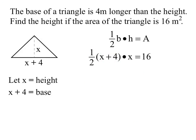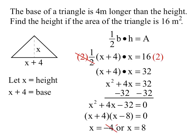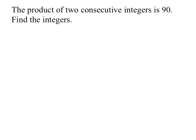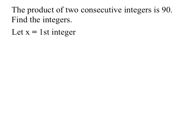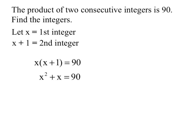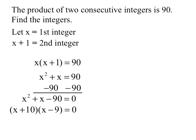One last problem: the product of two consecutive integers is 90. Consecutive integers are numbers in a row. We call our first integer X and our second X plus 1. If I'm looking for the product, I multiply those together, and 'is' means equals 90. I distribute the X, subtract, set it equal to zero, and factor: what multiplies to negative 90 and adds to positive 1? I get positive 10 and negative 9. So my solutions are negative 10 and positive 9.